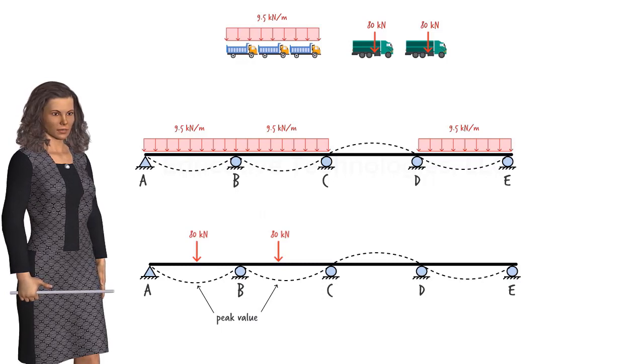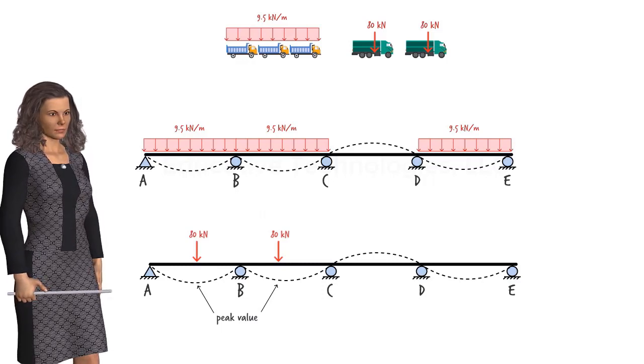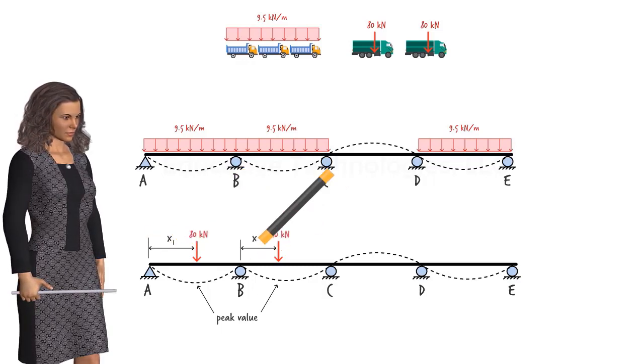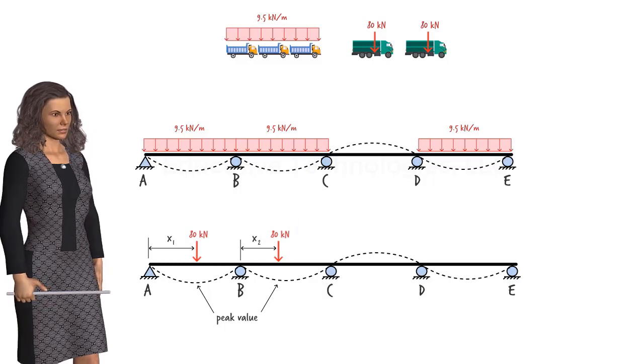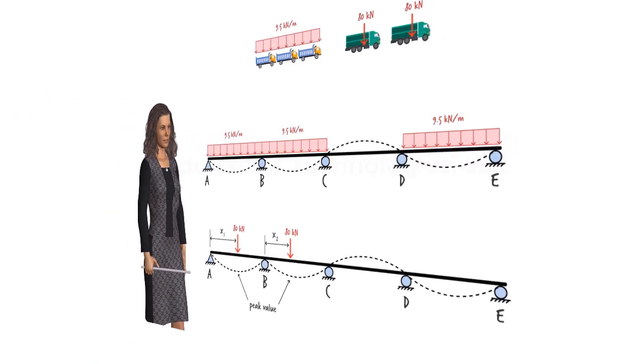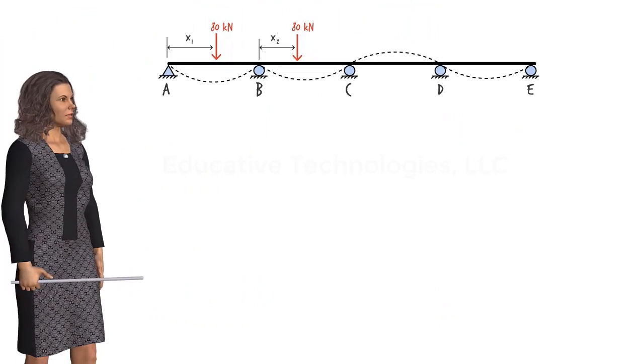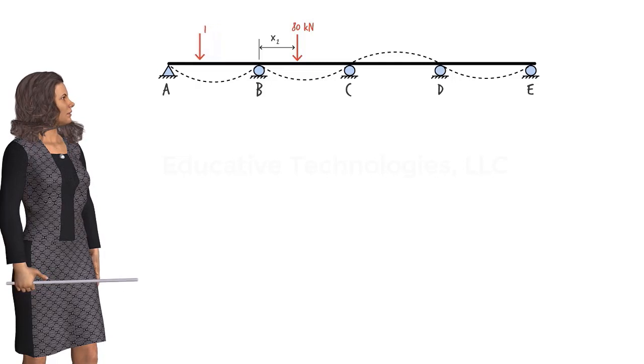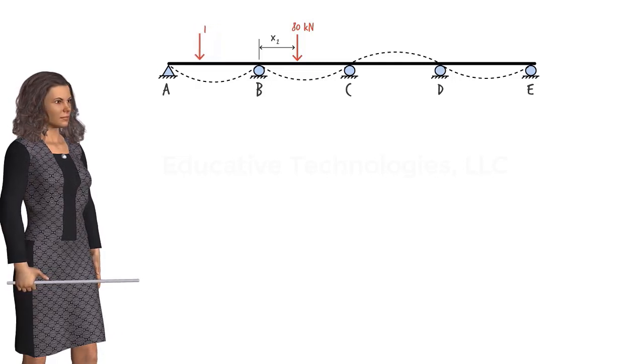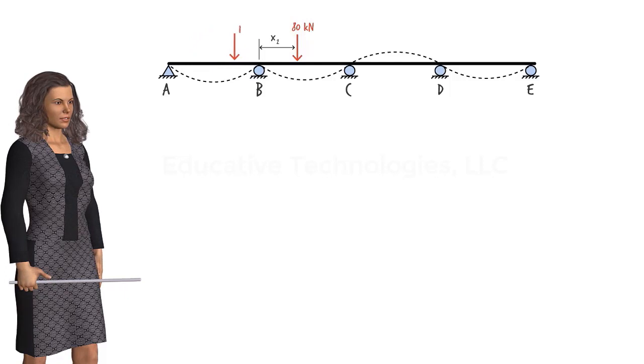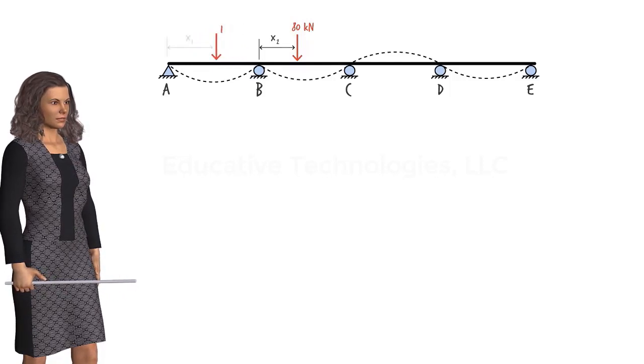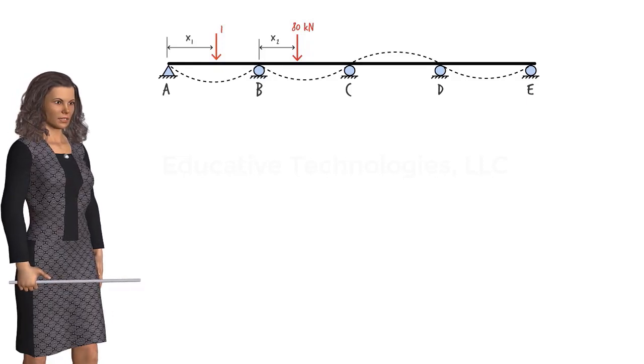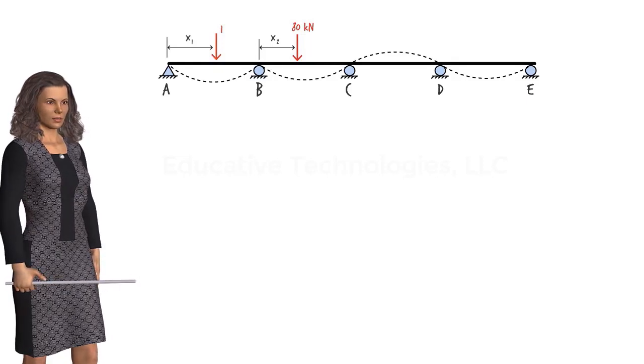Since the influence line is nonlinear, the locations of these points are not known. They need to be determined. Let's label them x1 and x2. We can determine these distances using a search technique. To determine x1, we can place a unit load at various points on segment AB and analyze the beam for each load position. By comparing the moment values at B due to these loads, we can accurately approximate the position at which the influence line attains its peak value in the segment. The same process can be used to determine x2.